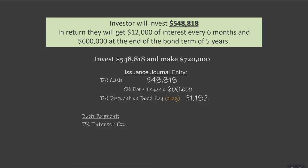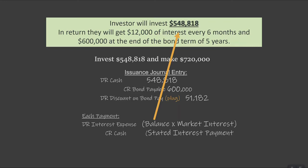On each payment, the company will debit interest expense, but the interest expense they debit is the balance of the note times the market interest rate — not the stated rate, but the market rate. The balance of the note is what is on the balance sheet net of premium or discount, so on day one our balance would be $548,818. The cash amount credited is always the stated interest payment of $12,000, so every journal entry will have that same credit to cash. The difference between the effective interest expense and the cash will be a credit to discount on bonds payable. We always know it's a credit when it's a discount because the initial discount of $51,182 at the end of five years will go to zero.